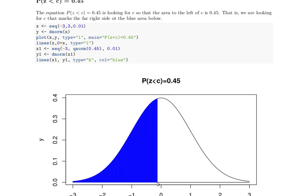We're looking for this C value right here so that this area is 45% of the total area, that blue area.